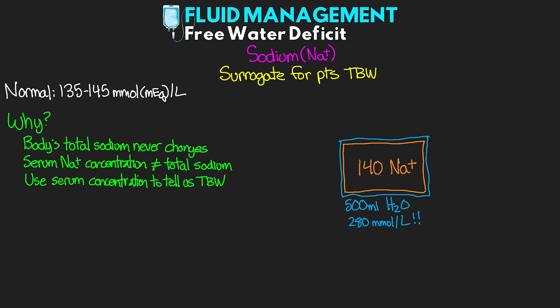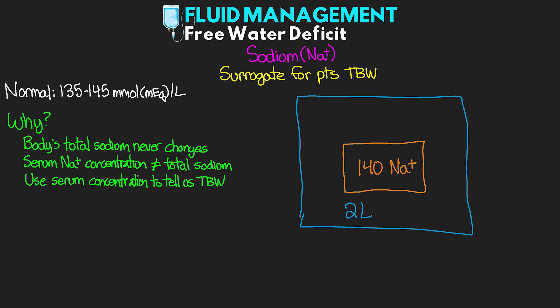On the other hand, if we take the same 140 millimoles of sodium and dilute that with two liters of water, then we'd end up with a less concentrated solution of 70 millimoles per liter. Again, extreme and unrealistic, but does this make sense how the total sodium amount is staying the same, but based on how much or how little water, we're seeing different concentrations when we sample that fluid? We aren't changing the sodium, but when we sample the concentration — our patient's serum sodium level — we can determine how much water there is.